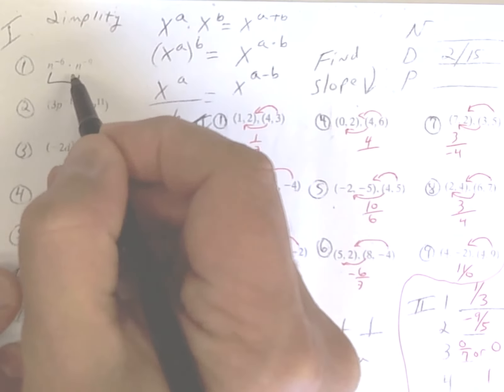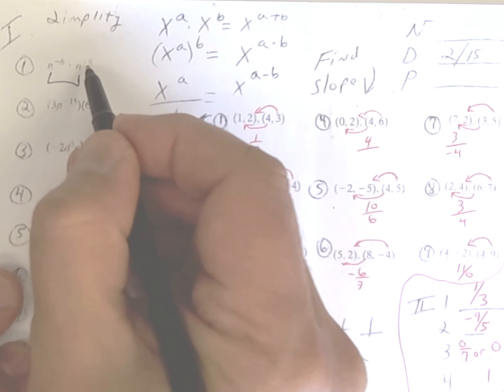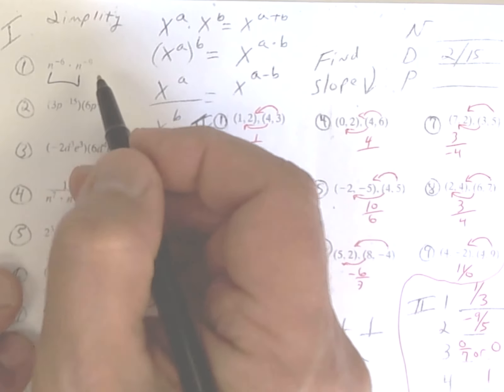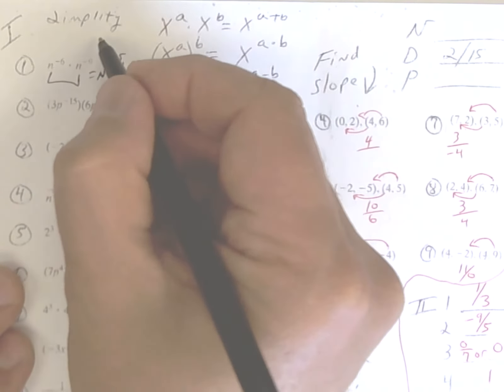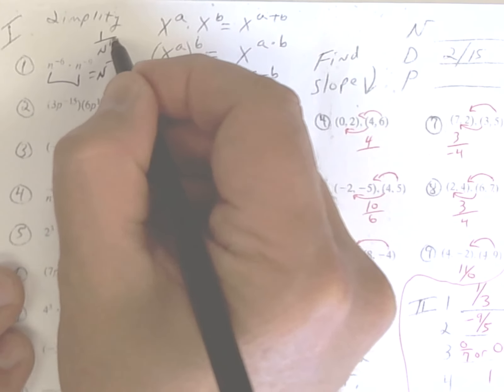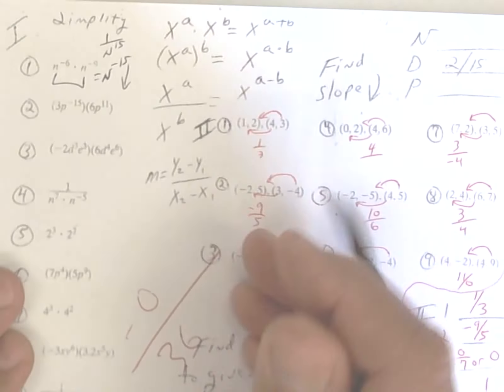What you have here is the same base and you're multiplying, so you add up a negative 6 and a negative 9. When you add that up, you get n to the negative 15. Now technically, you're supposed to drop that down and make it 1 over n to the positive 15, but I accepted either one.